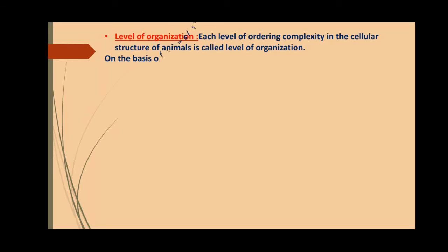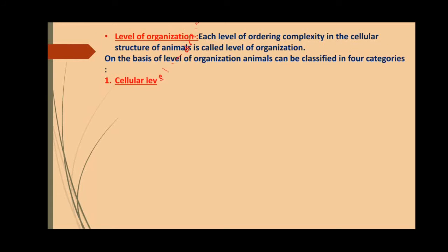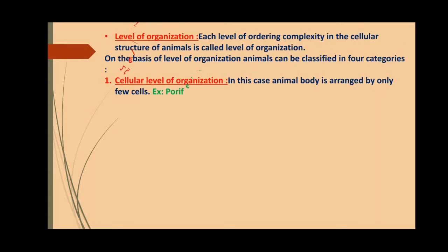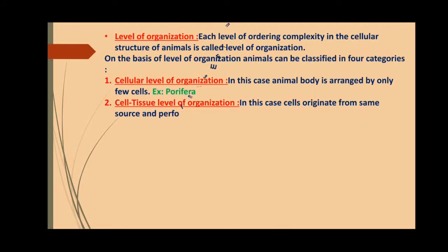Now, level of organization. The basic structural unit of living beings is the cell. Cell is the structural and functional unit of the living body. A number of cells together form tissue; a number of tissues together form an organ; different organs together form an organ system. So each level of ordering of complexity in the cellular structure of animals is called level of organization.